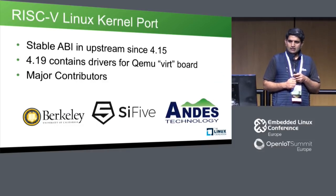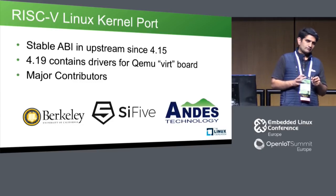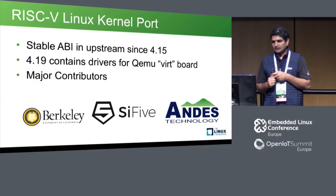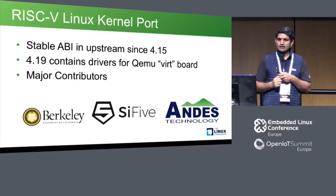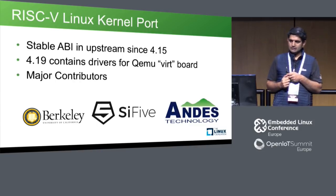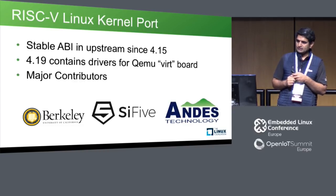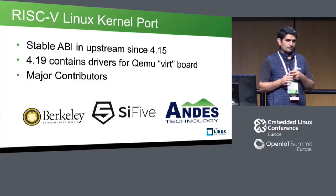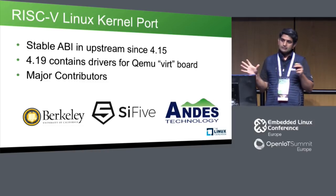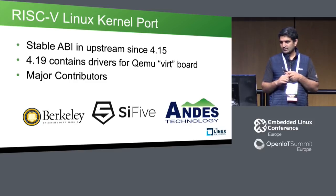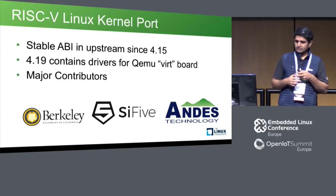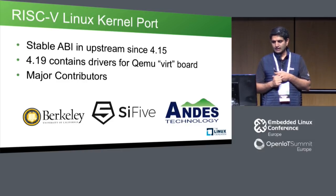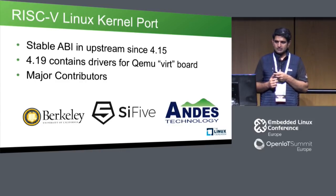For the kernel, 4.15 was the first release with initial user space ABI changes and basic support. Drivers were not all there, and since then they have been trickling in slowly. Kernel 4.19, released recently, contains drivers for QEMU VIRT board, so you can build the kernel from upstream and it will boot on QEMU using the VIRT board as an emulation platform. Major contributions came from Berkeley, SiFive, and Andes.